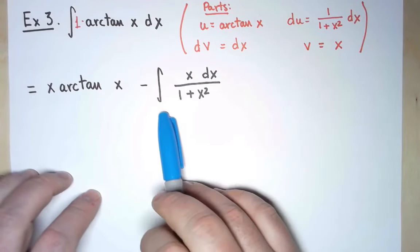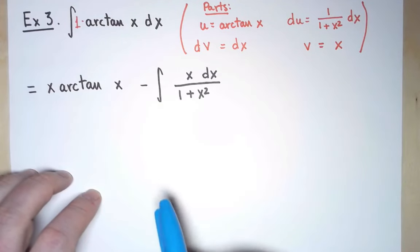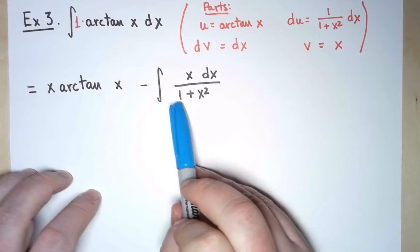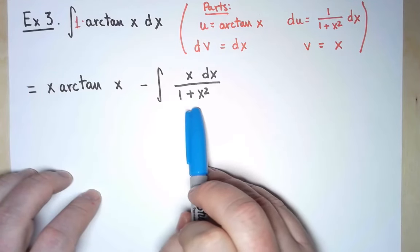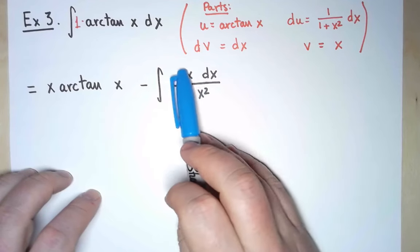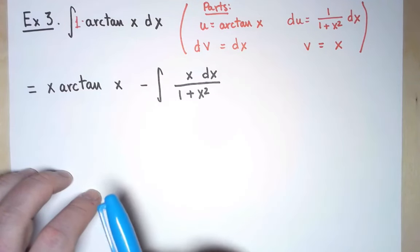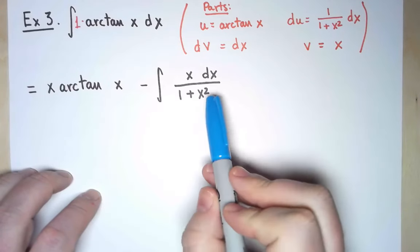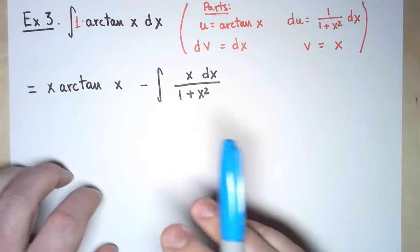But I'm not done. I still need to compute this integral. Now, in this case, I notice that the derivative of the denominator is exactly the numerator, except for a 2, a multiplying constant.